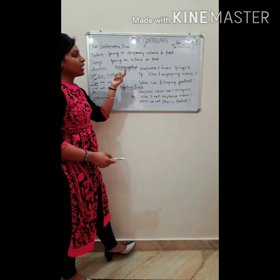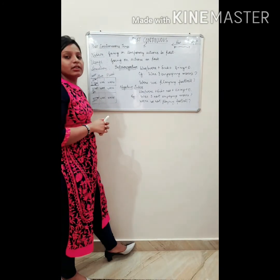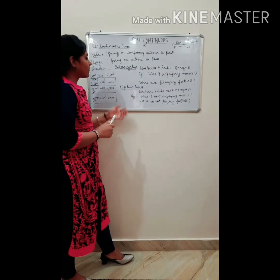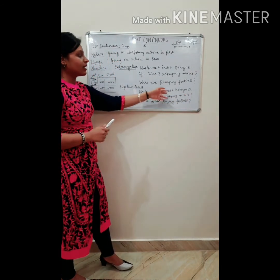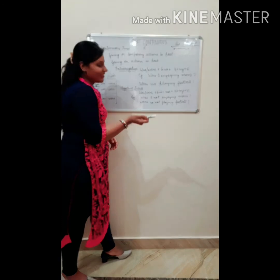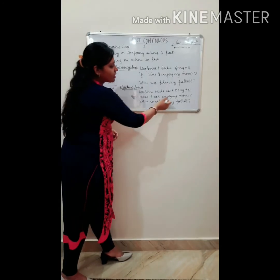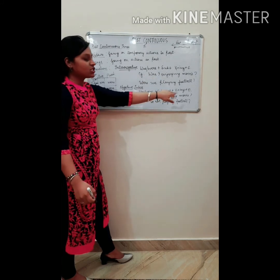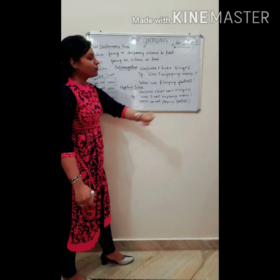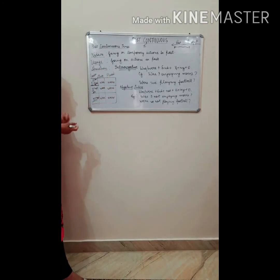You have to remember the usage of helping verbs and the form of verbs in the typical sentence — after that tenses will be very easy. For negative interrogative, the structure is: Was/Were + subject + not + first form of verb + ing + object. Simply add 'not' after the subject. Examples: 'Was I not enjoying movie?' 'Were we not playing football?' You have to just add 'not' in these sentences.